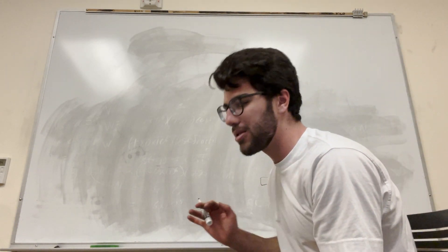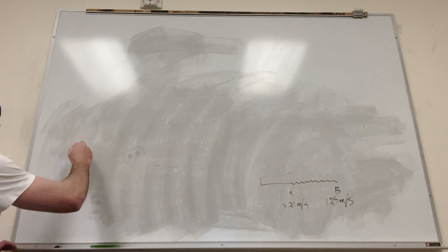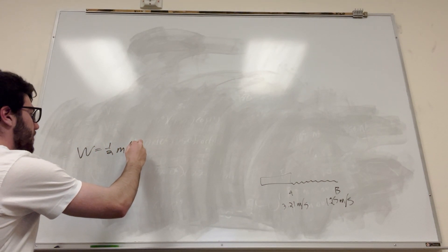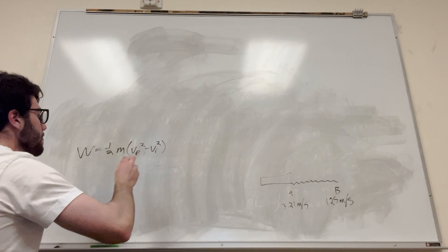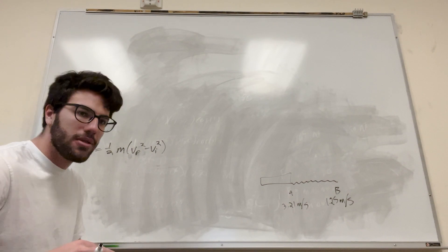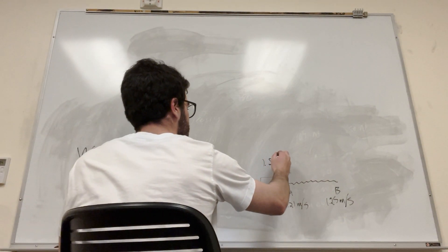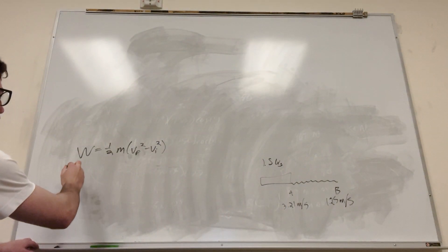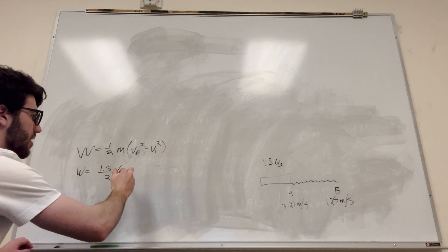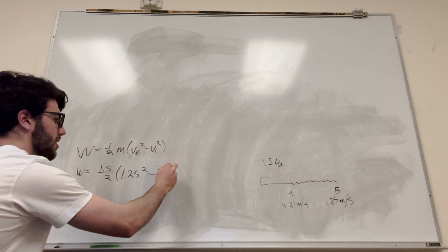Now, how much work has been done from A to B? To do this, we're going to need a formula. The formula for this is: work is equal to one-half times mass times velocity final squared minus velocity initial squared. So we have velocity initial, we got velocity final, and the mass is 1.5 kg. We can just plug all this in — work equals 1.5 divided by 2, times 1.25 squared minus 3.21 squared.